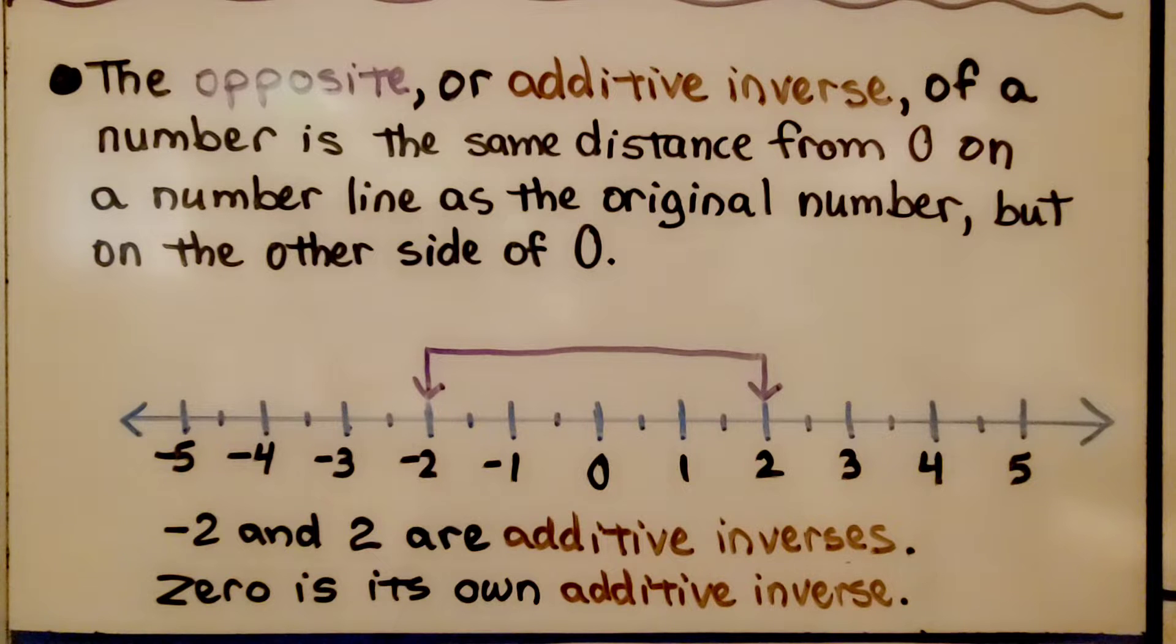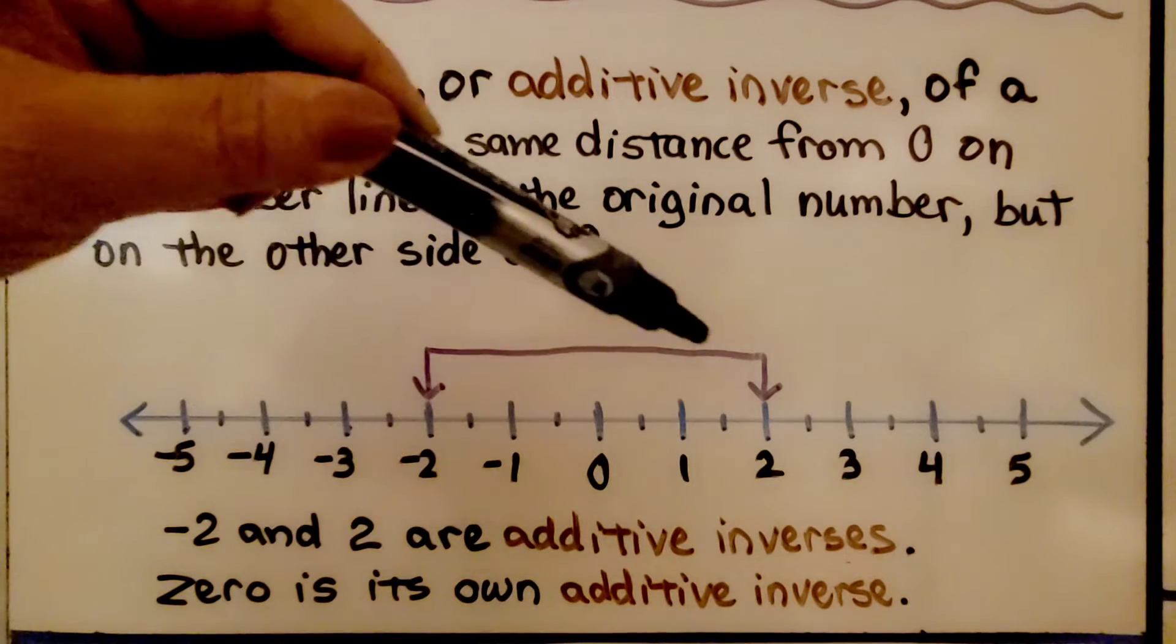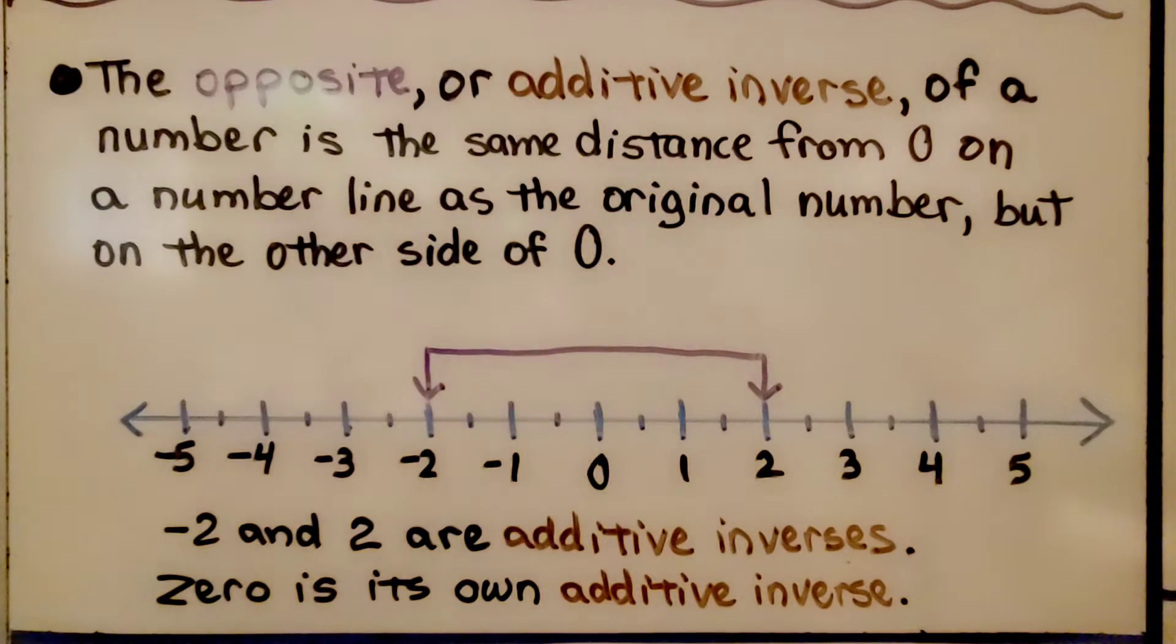The opposite, or additive inverse, of a number is the same distance from zero on a number line as the original number, but on the other side of zero. Negative two and positive two are additive inverses. Zero is its own additive inverse.